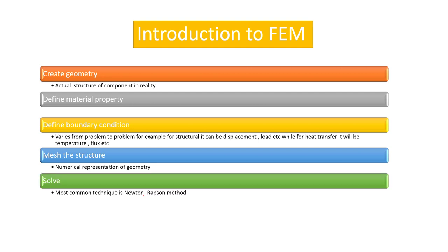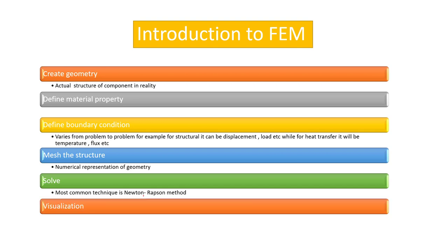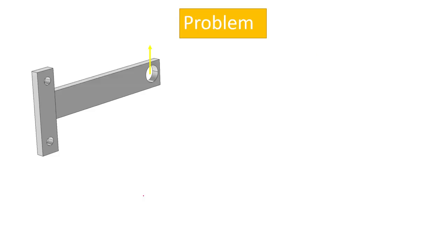The fifth step is to solve the problem. The most common technique used is the Newton-Raphson method, which we will discuss in a later video. The sixth step is visualization, which is a very important part of FEM. If you have the solution, you want to see how stresses vary in the structure or how flow changes when boundary conditions are modified. Using visualization tools, we can predict maximum and minimum stress locations and other parameters.